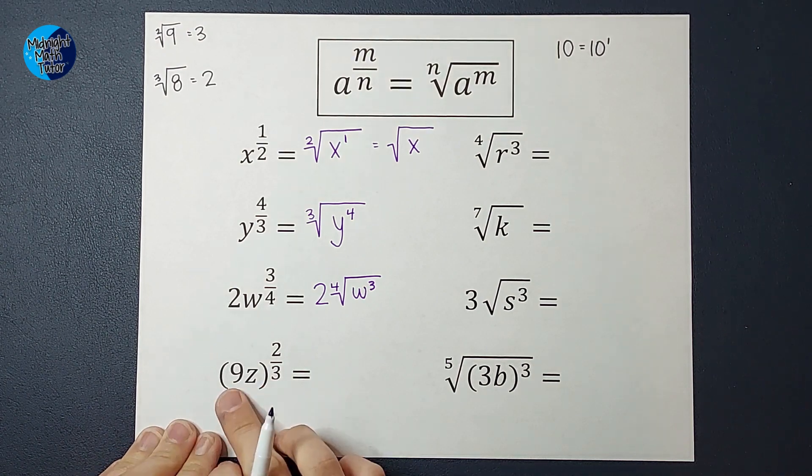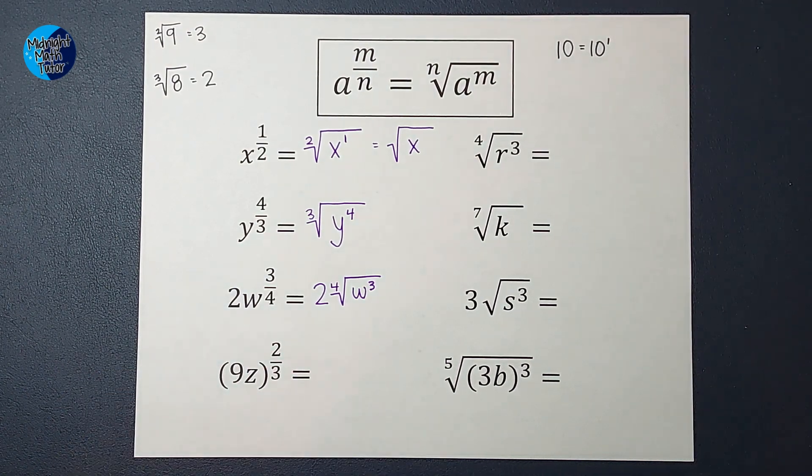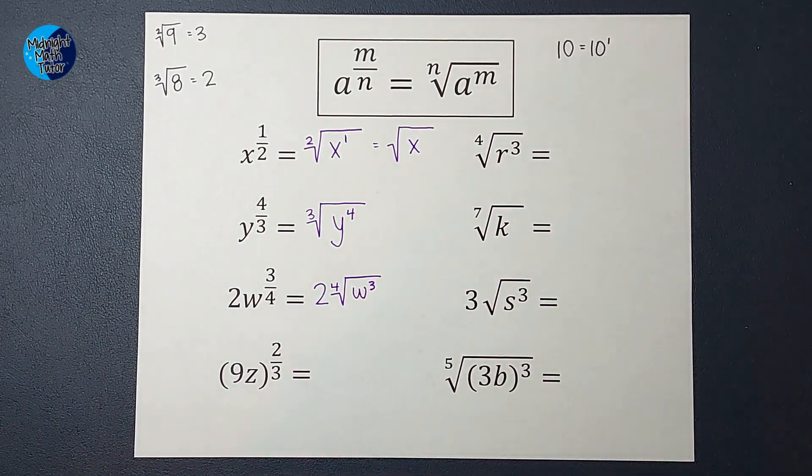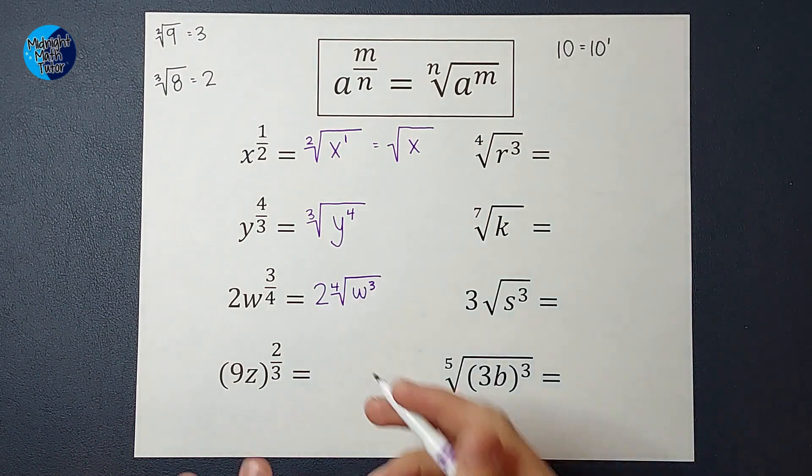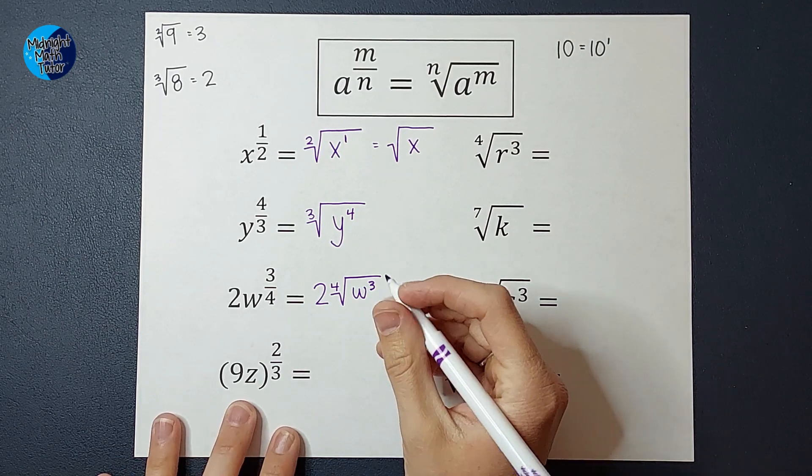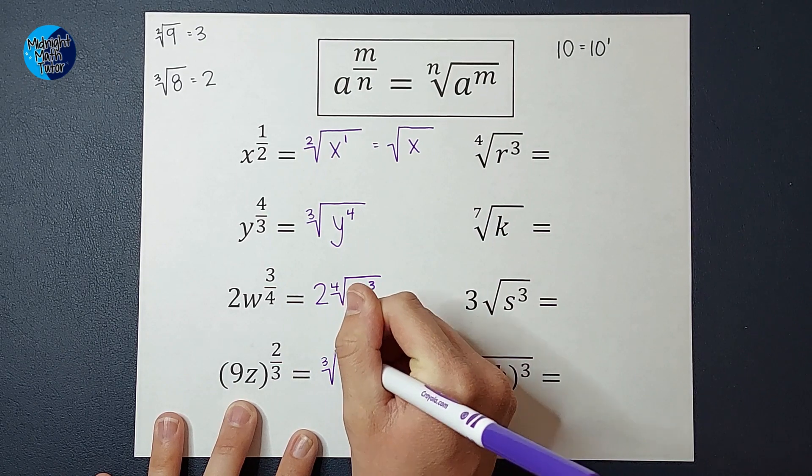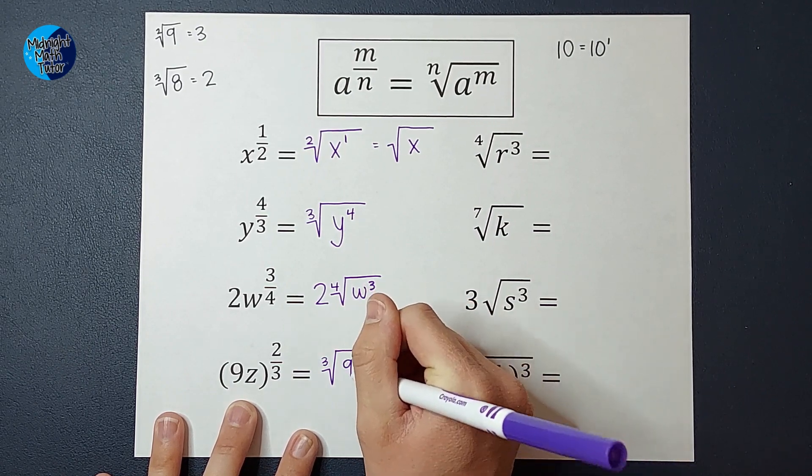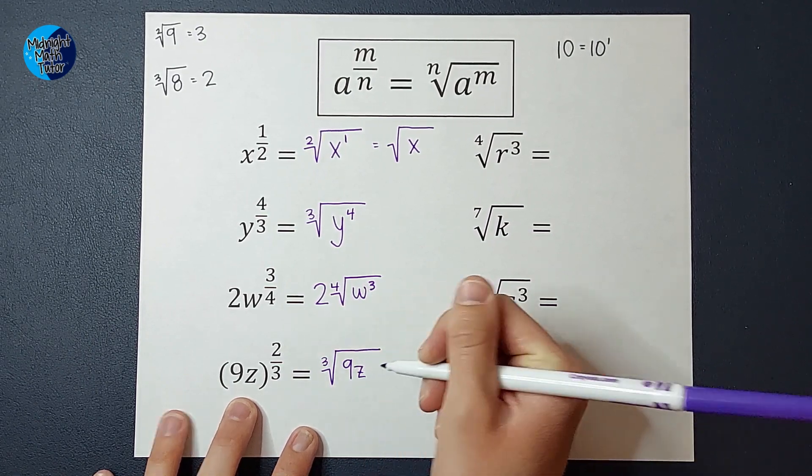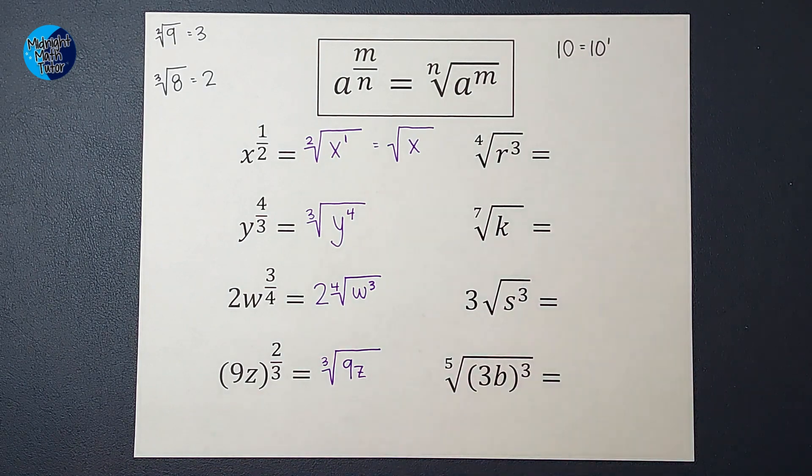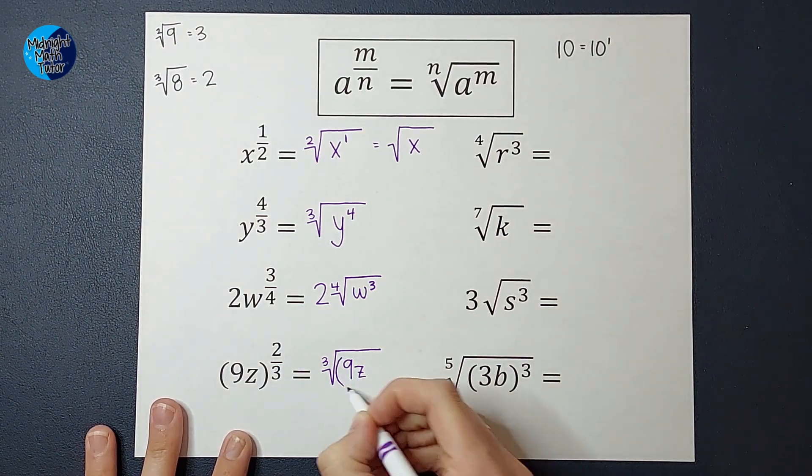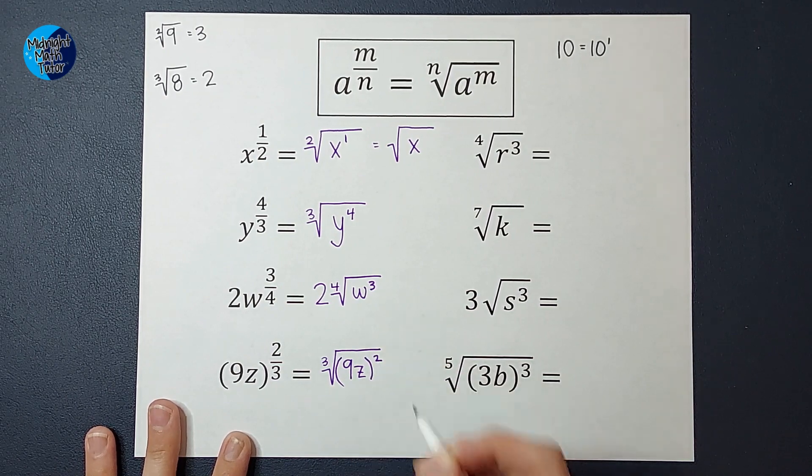All right, this one, the exponent applies to both because of those parentheses. So I'm going to write both the 9 and the z under the radical. So it's going to be the third root or the cubed root of 9z squared. And we want to make sure the squared goes to the 9 and the z, so we're going to use those parentheses again.